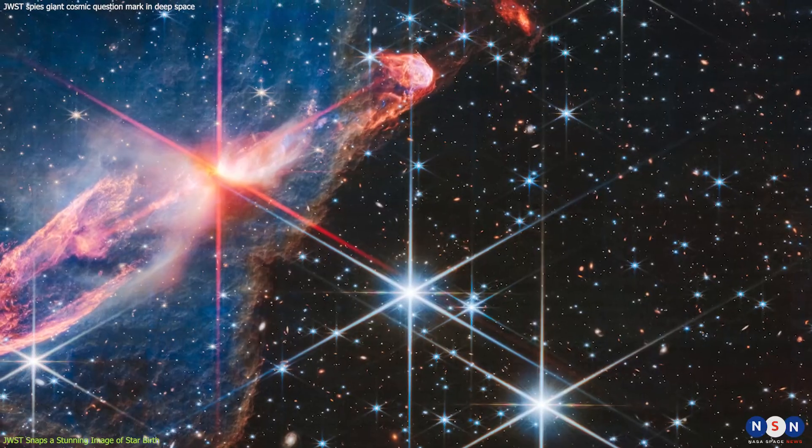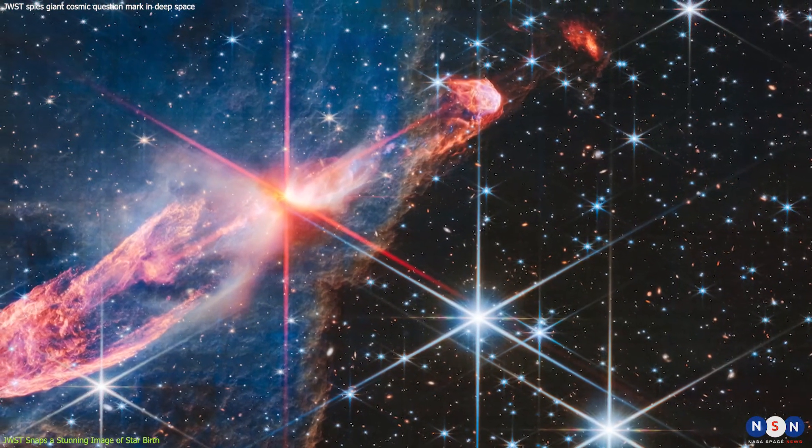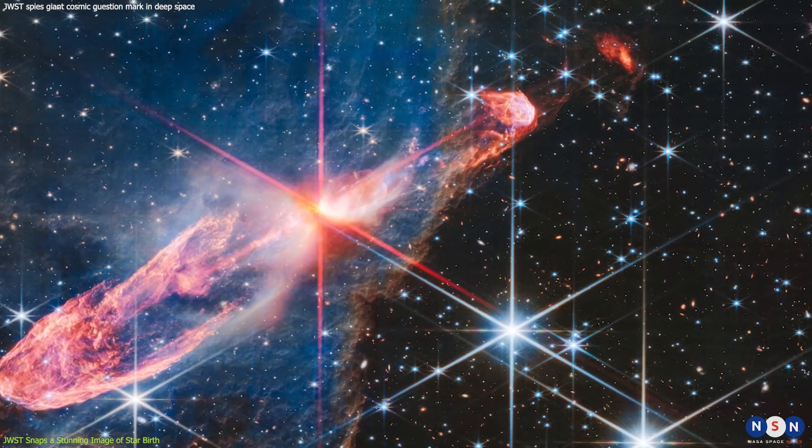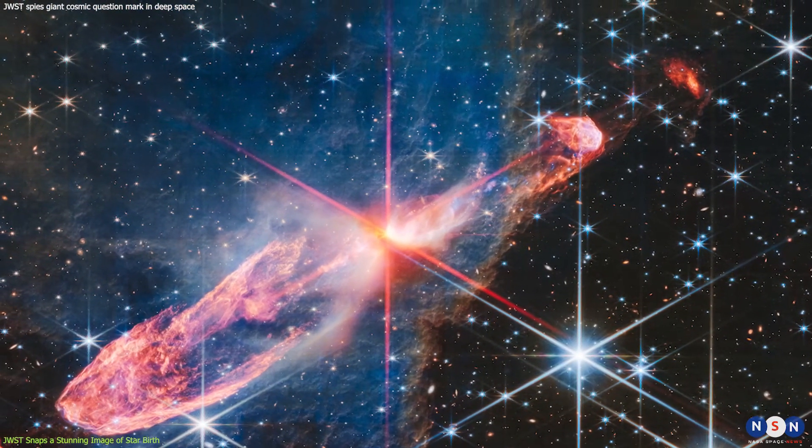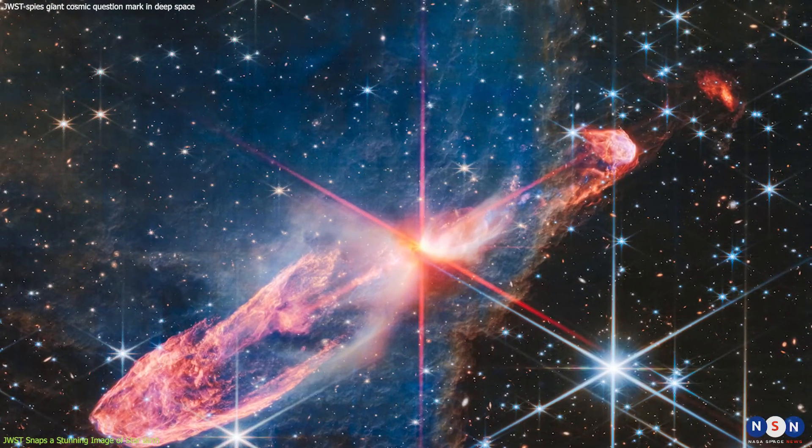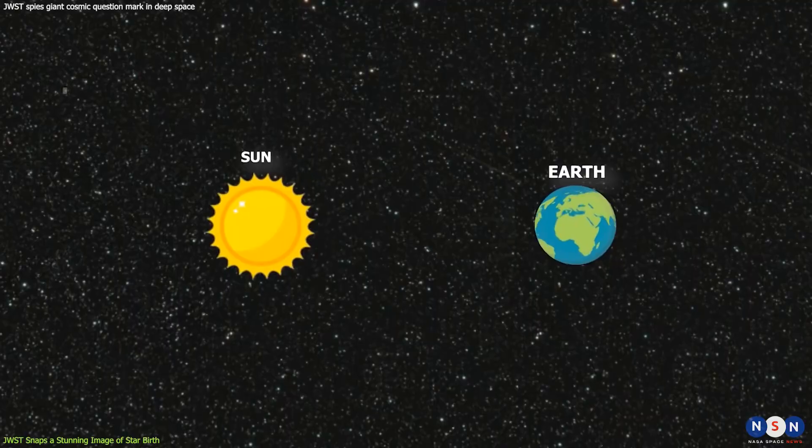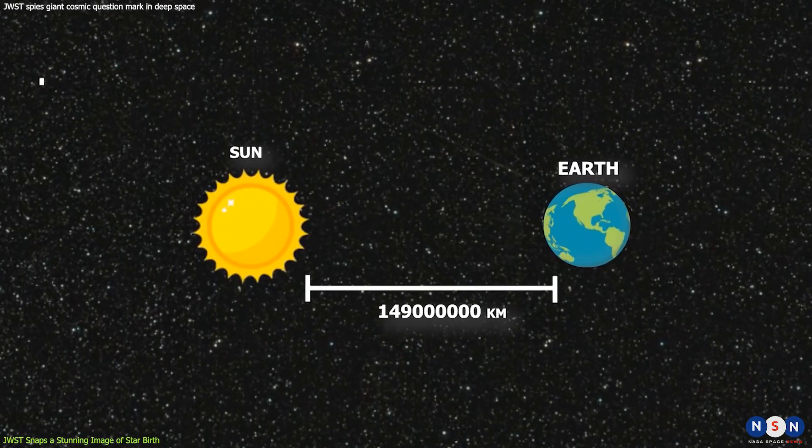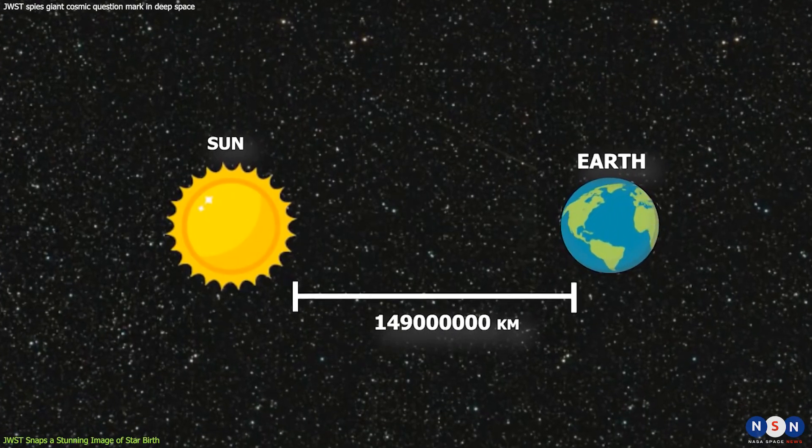It was obtained using Webb's near-infrared camera, which has a resolution of about 0.07 arcseconds per pixel. This means that each pixel in the image covers an area of about 100 astronomical units at the distance of HH46 and HH47. One astronomical unit is the average distance between Earth and the Sun, or about 150 million kilometers.